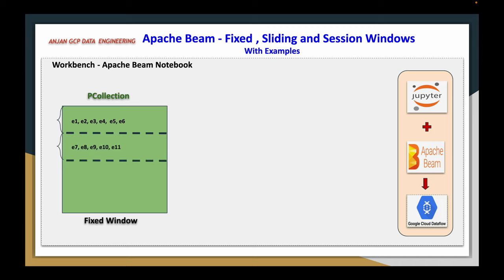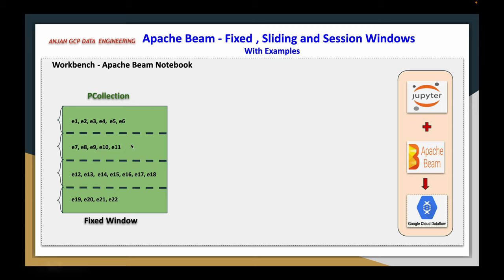Then in the next 5 minutes it has sent elements from element 7 to element 11. The window duration is 5 minutes — each window has been divided into 5-minute duration. Now I have 4 windows. I can apply either grouping, combiners, or any kind of aggregation on top of each of these fixed windows. It will emit output on a per-window basis. This is called a fixed window.